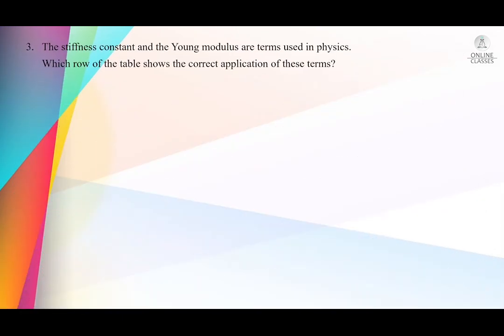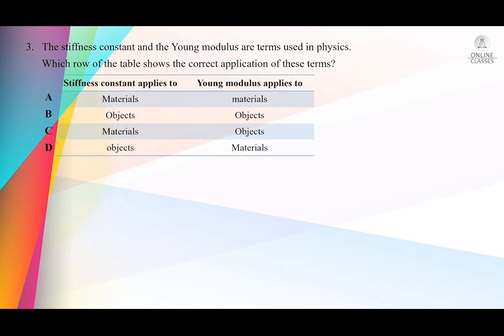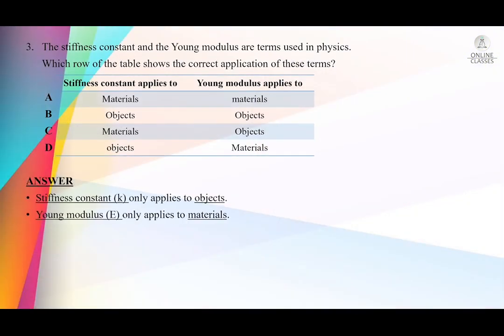We go to the third question. The stiffness constant k and Young's Modulus are terms used in physics. Which row of the table shows the correct application of these terms? The stiffness constant applies to objects — we can apply the stiffness constant for different objects — whereas Young's Modulus applies to material. Young's Modulus changes from material to material. So the answer is D: stiffness constant applies to objects, Young's Modulus applies to materials.